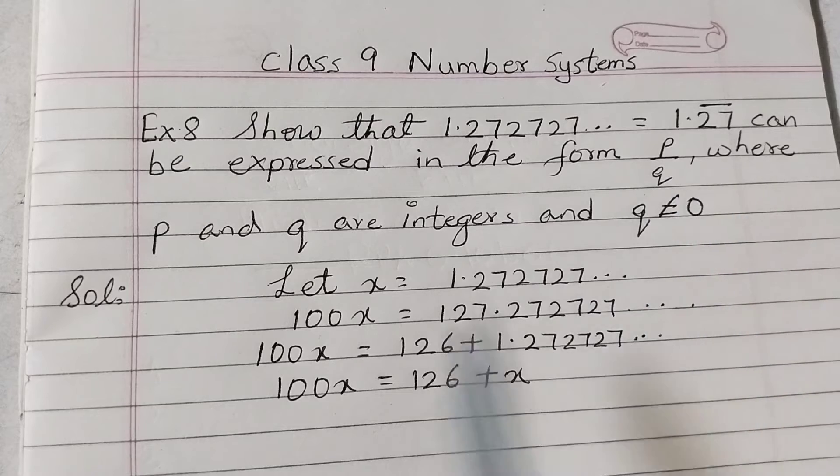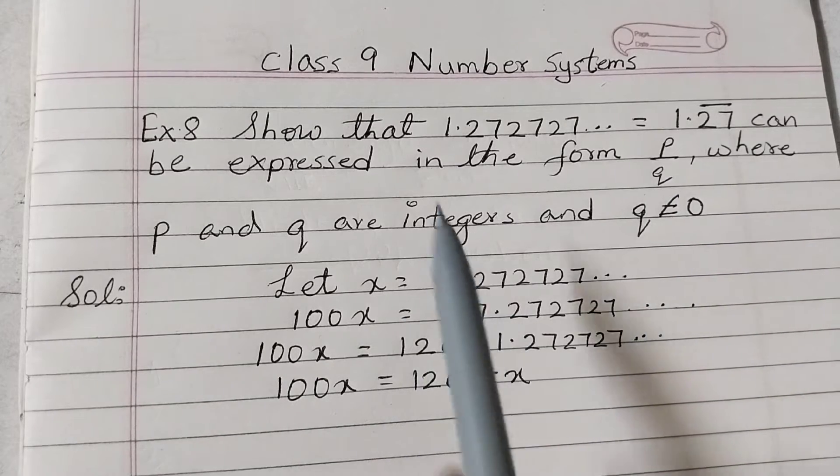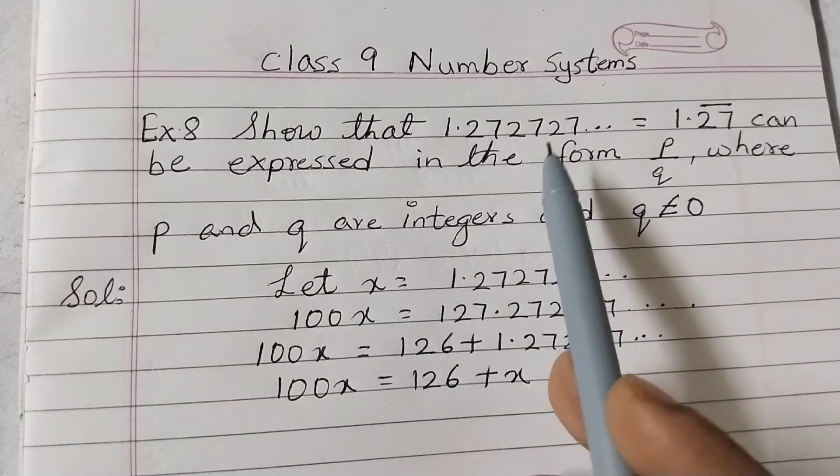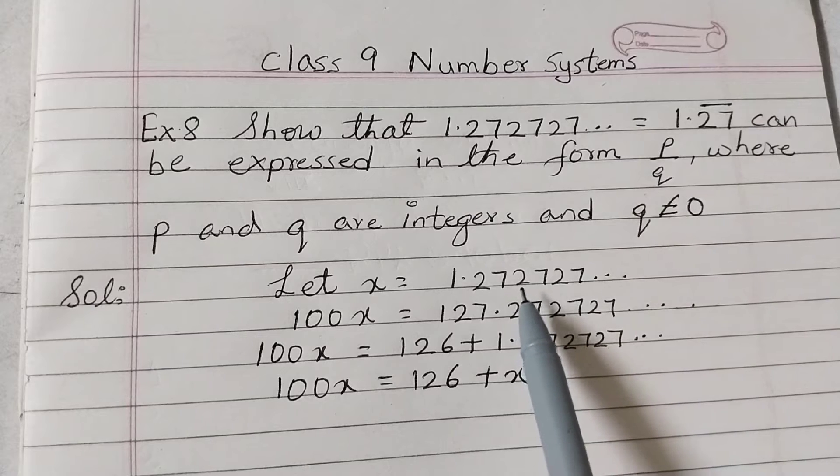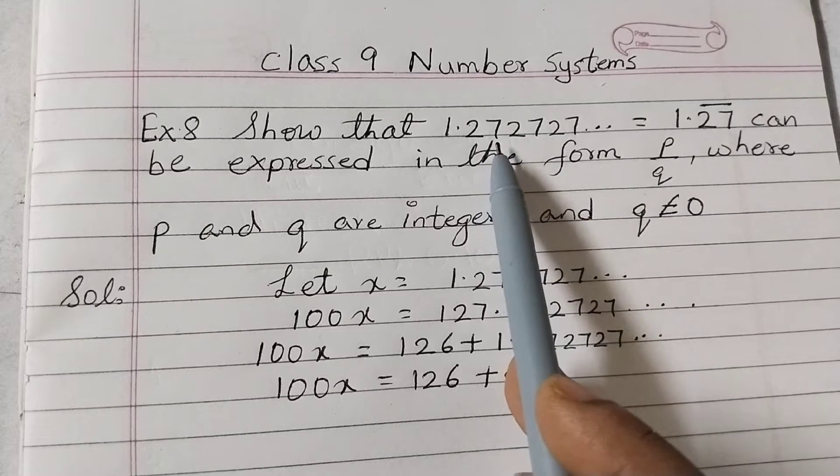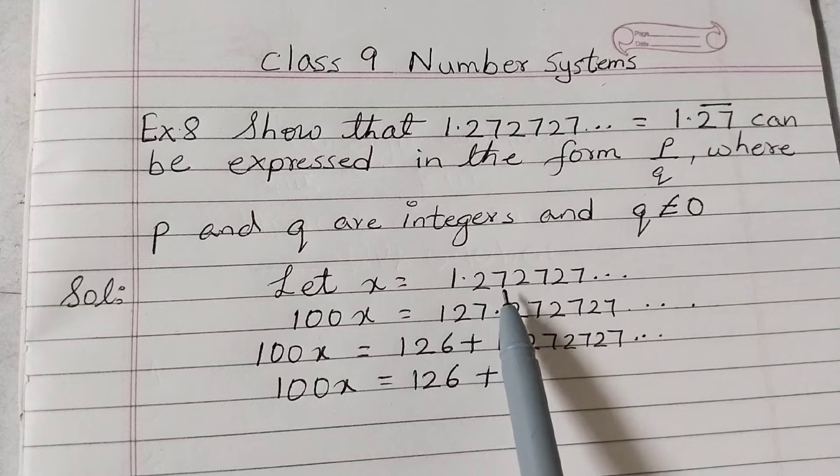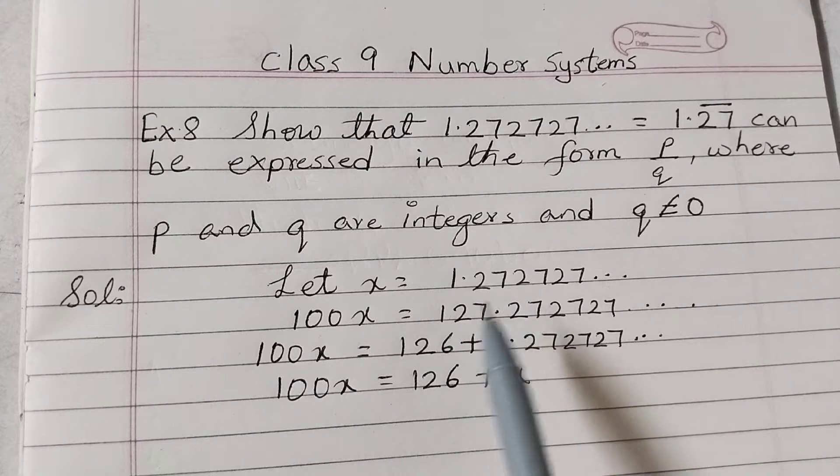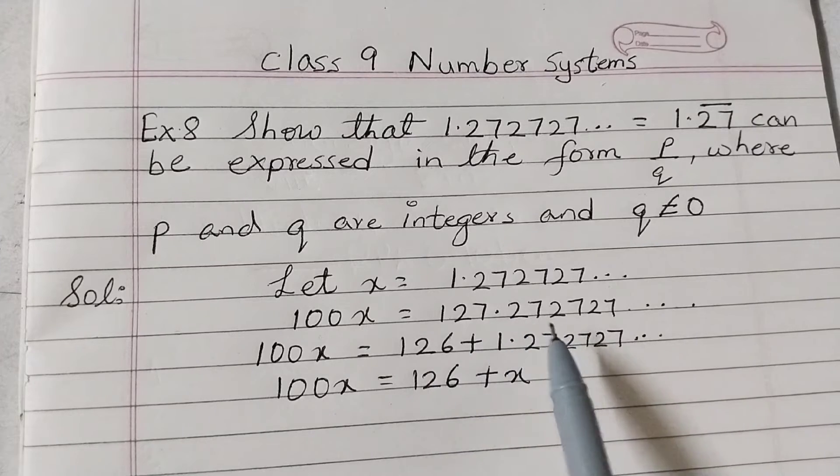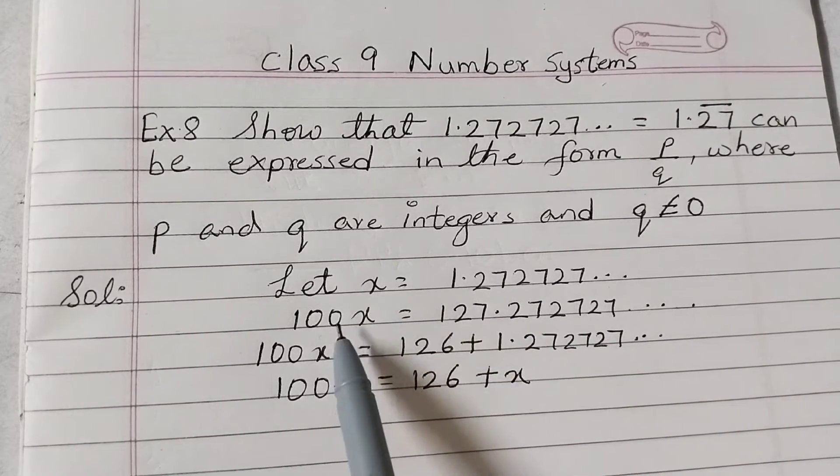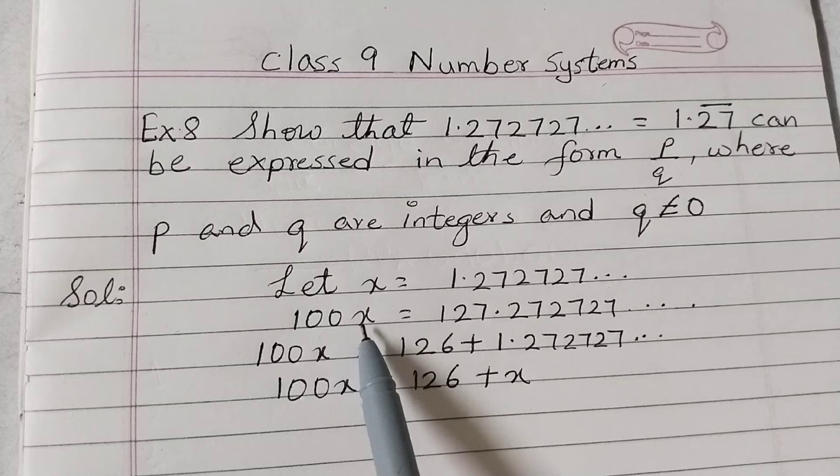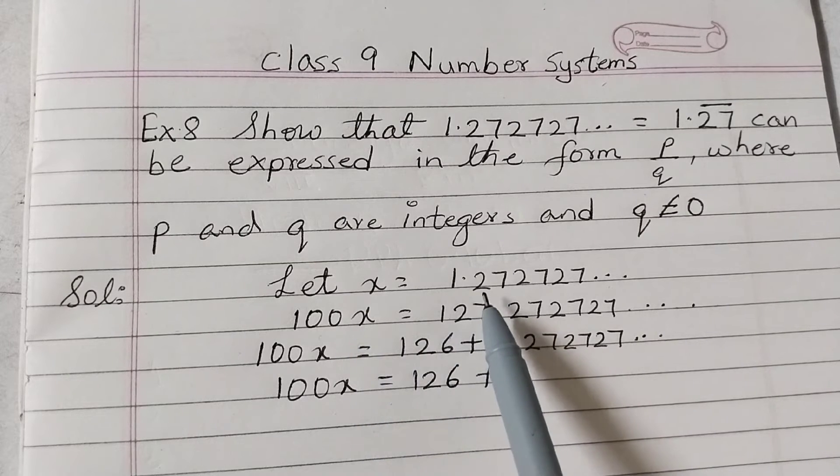So the first step is let x equal this given number. Now two digits are repeating, so we will multiply by 100. If one digit is repeating we multiply by 10, if 2 then 100, if 3 then 1000. So left hand side will be 100 times x is 100x, right hand side...